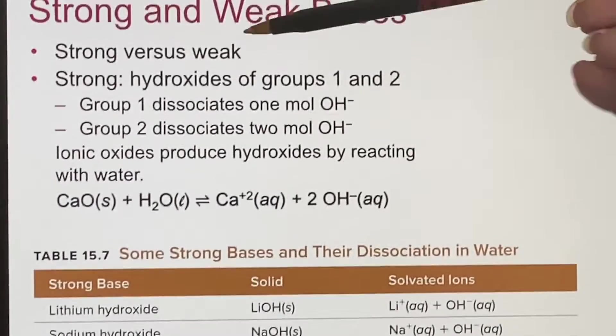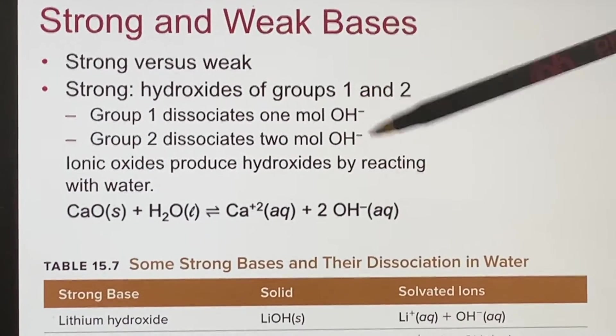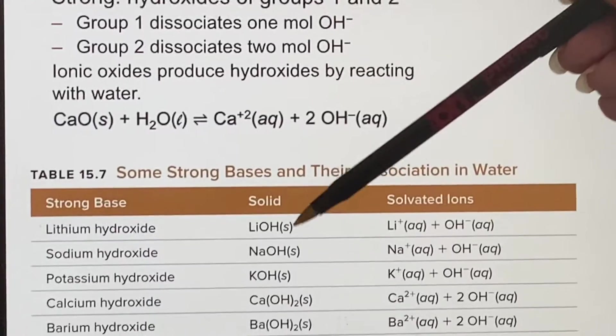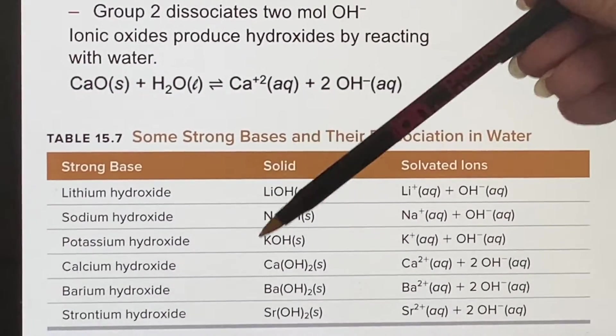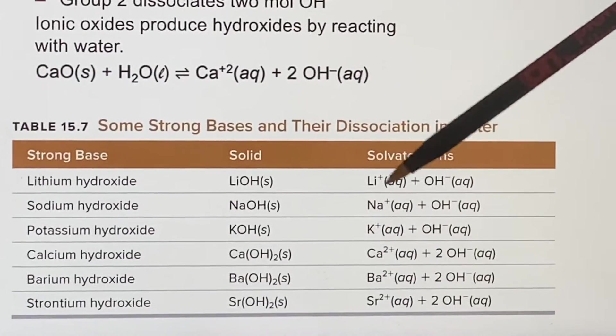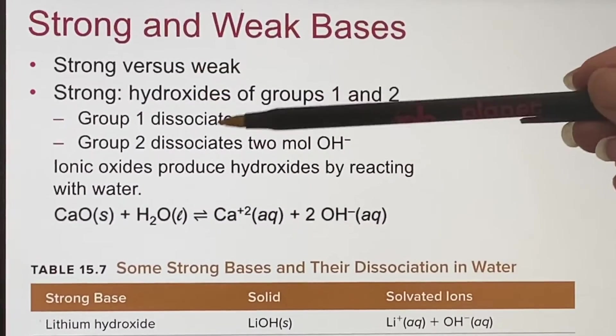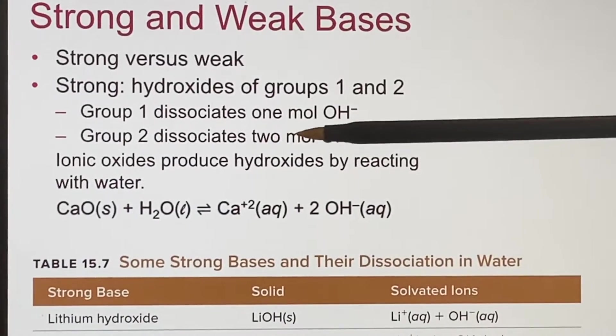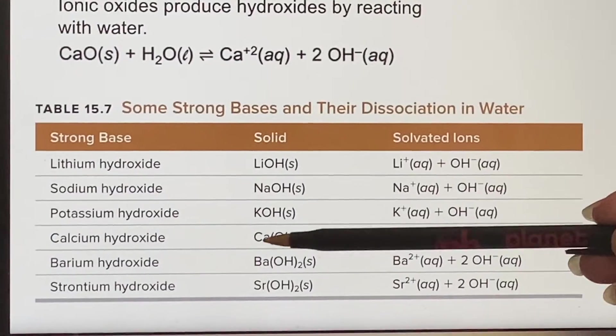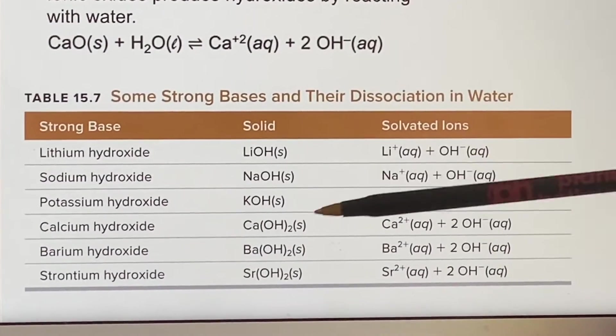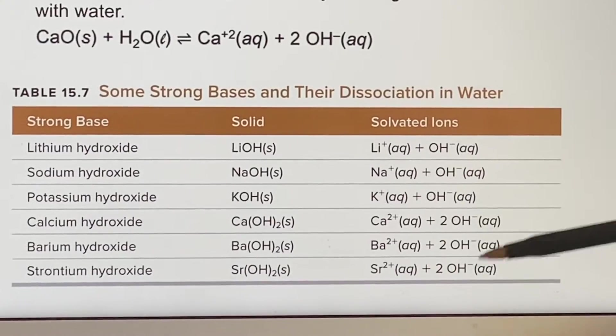The thing you have to recall though is if group one dissociates, you're only going to get one mole of hydroxide because hydroxide ion is a minus one and all of the ones in group one form plus one ion, so you will get one hydroxide. If you have a group two base, when this dissolves, it's forming calcium that's a plus two, which means there were two hydroxides attached to it. So you'll get two hydroxides.